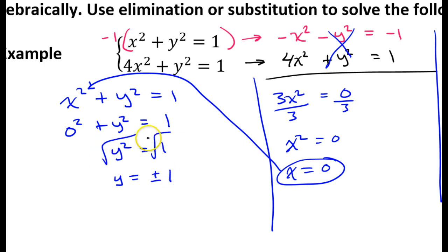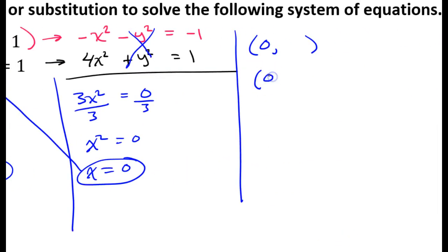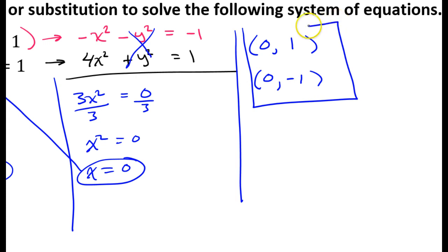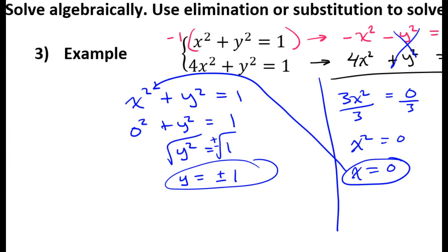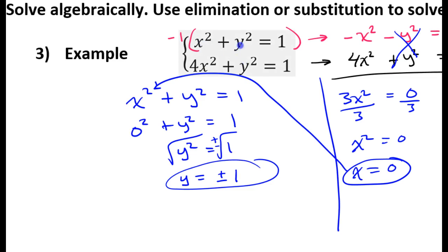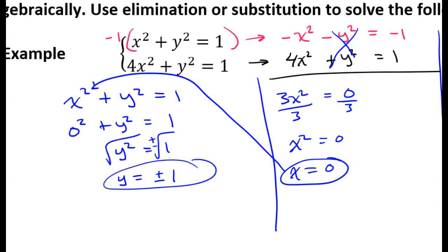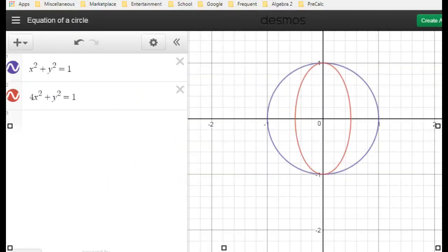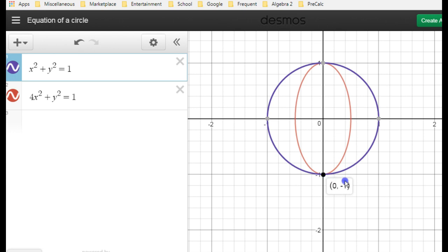I have one x-value but two y-values, so I write the x-value twice: the solutions are (0, 1) and (0, -1). Let's verify on Desmos. The purple one is the circle, the red function is the ellipse, and the intersection points are (0, -1) and (0, 1), just as we found.